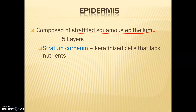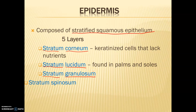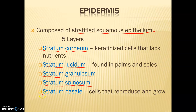There are five layers associated with the epidermis. First, our stratum corneum contains keratinized cells that lack nutrients — that's our very top, superficial layer. Our stratum lucidum is only found in high-shedding areas such as our palms and the soles of our feet, so we have an extra layer of skin there. Then we have our stratum granulosum, stratum spinosum, and finally our stratum basale — the very bottom layer of this stratified squamous epithelium.